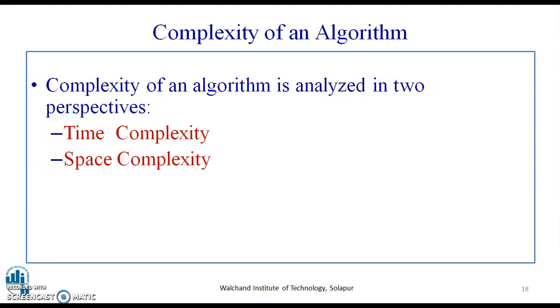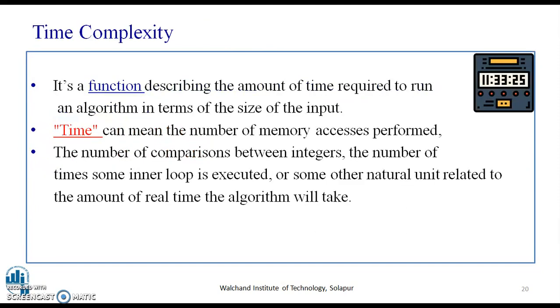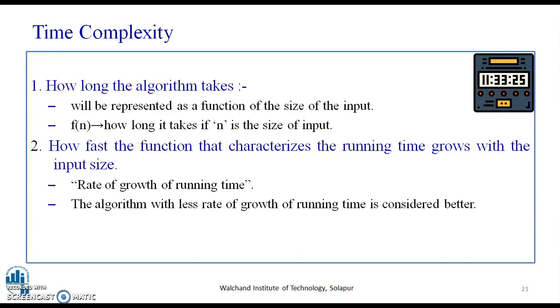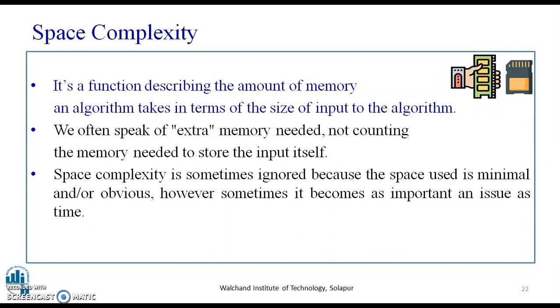Now complexity of an algorithm is basically analyzed in two perspectives: the time complexity and the space complexity. Time complexity is a function describing the amount of time required to run an algorithm in terms of size of input. It depends on the function of size of the input, that is rate of growth of running time. Space complexity is a function describing the amount of space an algorithm takes in terms of size of input to the algorithm.